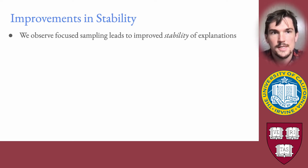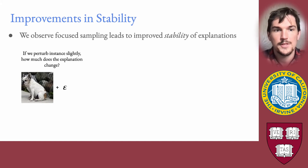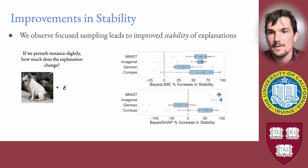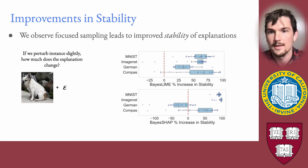One interesting observation is that focus sampling also improves the stability of the resulting explanations — meaning if we take an instance and perturb it slightly, the explanation doesn't change much. Looking at stability across a variety of different datasets using both the Bayesian LIME and SHAP variants, we see that the resulting explanations are quite a bit more stable. Because our explanations converge more quickly with focus sampling, they are in general more stable.